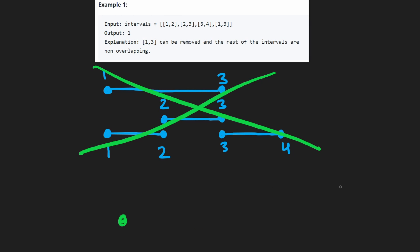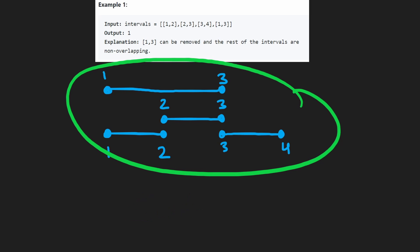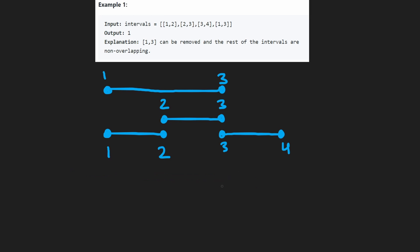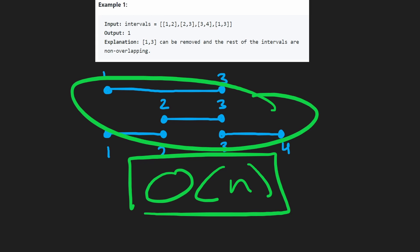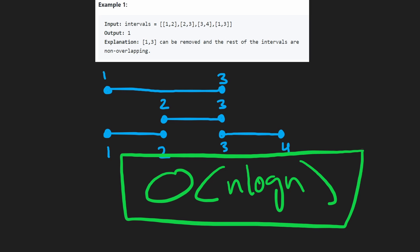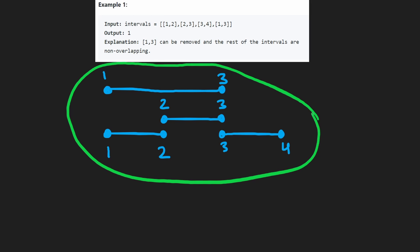So the algorithm is: sort the entire array based on the starting value, compare adjacent pairs, and use the conditions I just described. The time complexity: iterating is O(n) for a single pass, but the sorting is the bottleneck, so the overall time complexity is O(n log n).